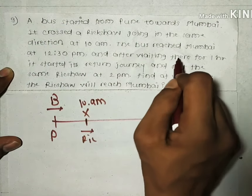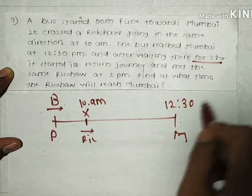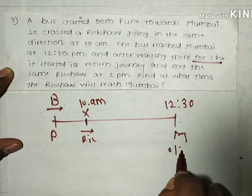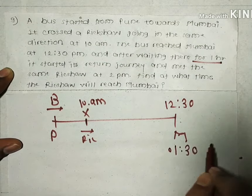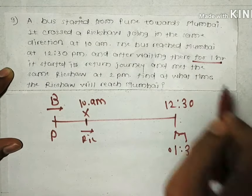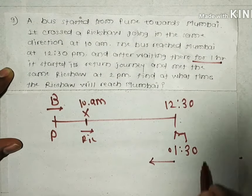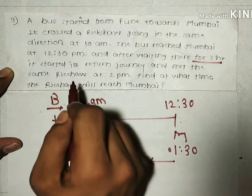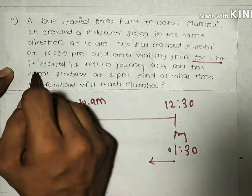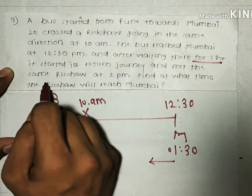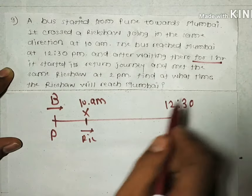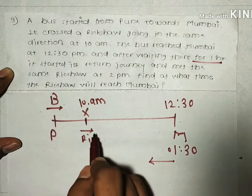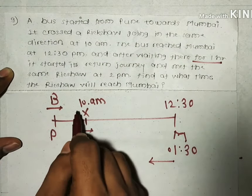After waiting there for one hour — up to 1:30pm — it started its return journey. The bus again started its return journey at 1:30pm and met the same rickshaw at 2pm. The rickshaw is still going towards Mumbai.